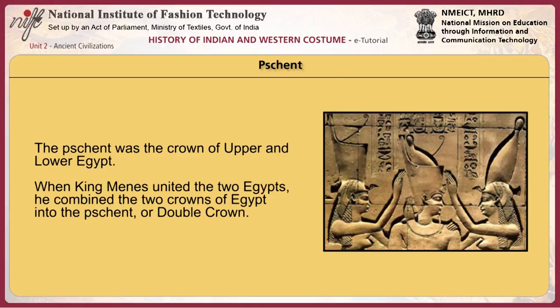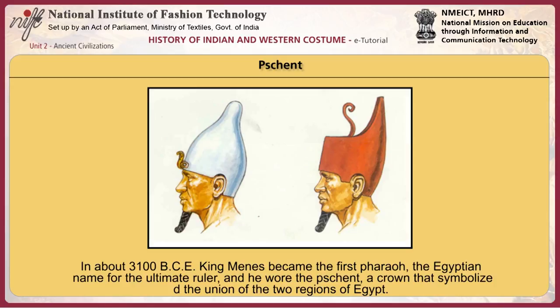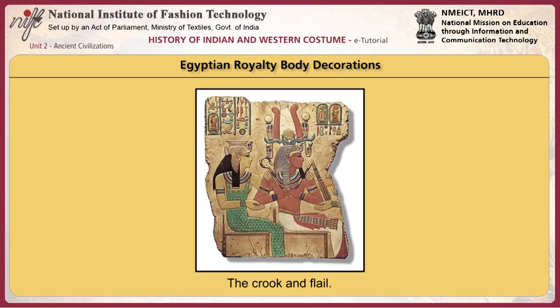The Shent was the crown of upper and lower Egypt. When King Menes united the two Egypts, he combined the two crowns into the Shent or double crown. The Shent had at its base the red crown, which completely covered the wearer's hair, and the white crown emerged out of the top of the red crown. The Shent symbolized the power of the pharaohs who ruled over one of the greatest empires of the ancient world. The ruling pharaohs, kings and queens, wore special ornaments filled with symbolism. Nearly every Egyptian pharaoh carried the crook and flail, symbols of the rule of the king.